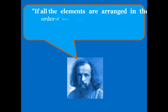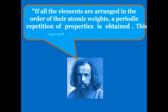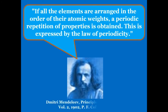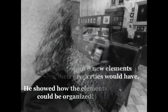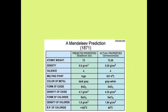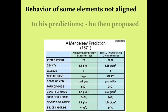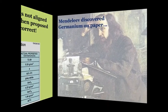"If all the elements are arranged in the order of their atomic weights, a periodic repetition of properties is obtained. This is expressed by the law of periodicity." He showed how the elements could be organized, predicted the existence of eight new elements, and when the behavior of some elements did not align with his prediction, he proposed that their measured atomic weights were incorrect.